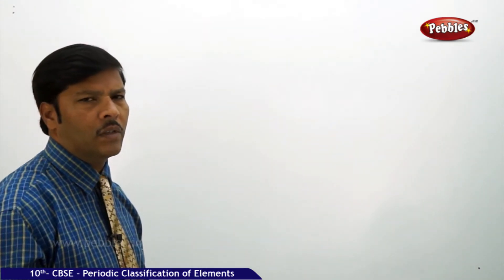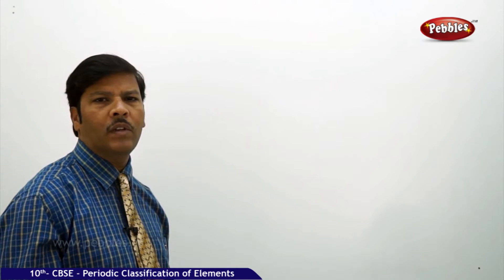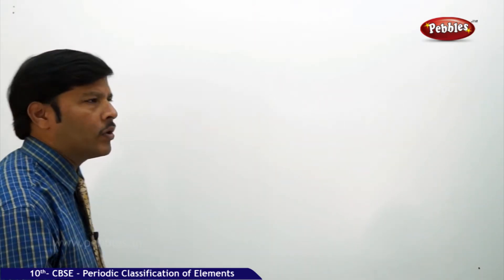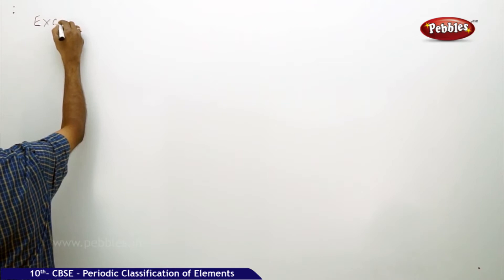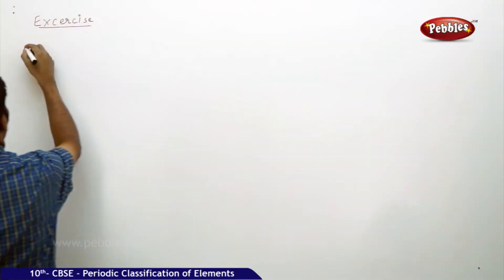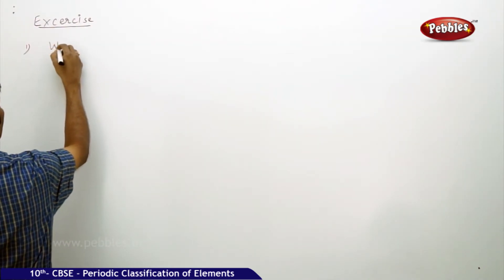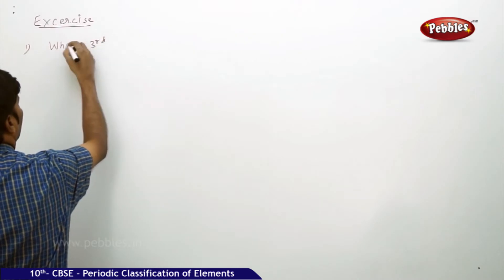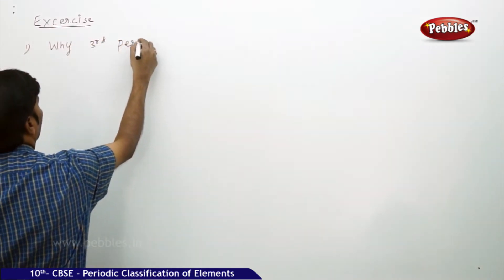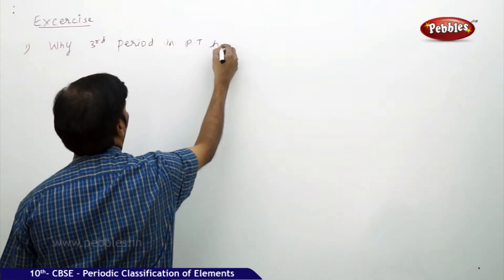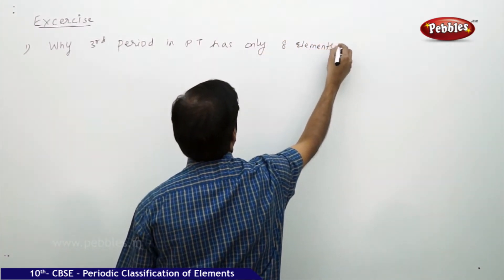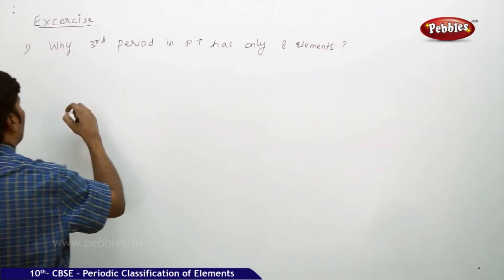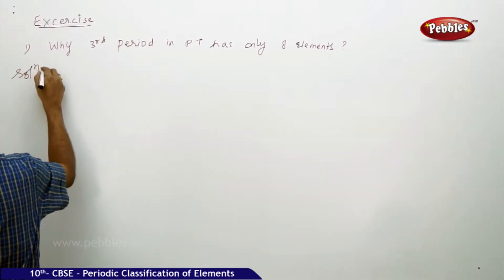Let's discuss the next part of the topic in the periodic table. Today we are going to discuss an exercise — a few questions on the periodic table. The exercise we take is: why does the third period in the periodic table have only eight elements? You can answer this question using the following solution.